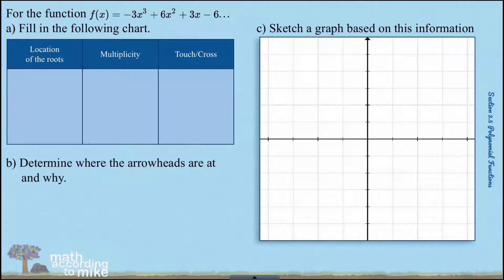For the function f of x is negative x cubed plus 6x squared plus 3x minus 6, we're going to do everything, but notice this time we don't have a graph. So we're going to have to do everything by hand. To fill in the chart, we need to factor this thing first. I don't have any room. I'm going to do it down here.